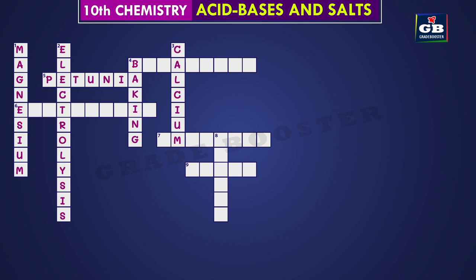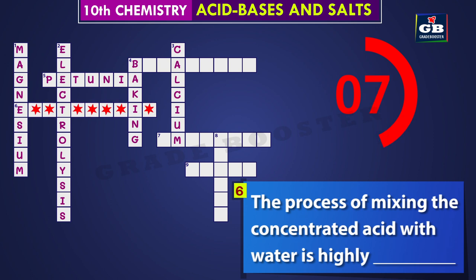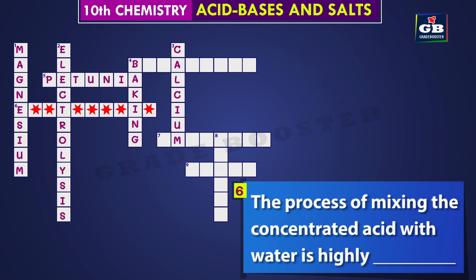Let's see the next one — six across. The process of mixing the concentrated acid with water is highly dash. Did you get it? The answer is exothermic. The process of mixing the concentrated acid with water is highly exothermic.